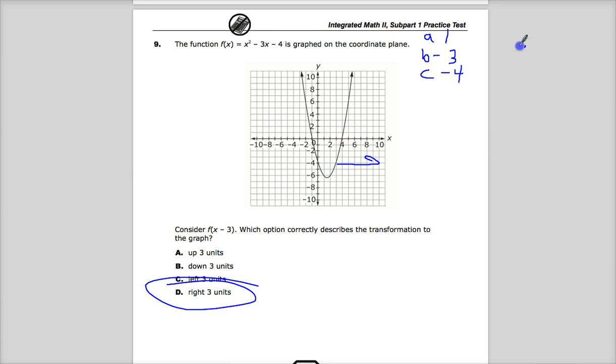So in order to find the vertex, I'd start out with finding the axis of symmetry, which would be the line right down the middle. Negative b over 2a. So negative negative three, two times one gives me 1.5. That's my h value. And in this case, it could be my x value as well.